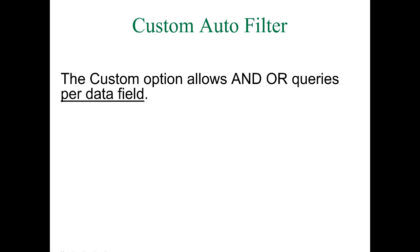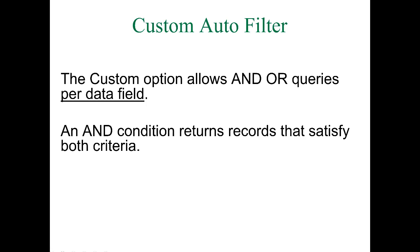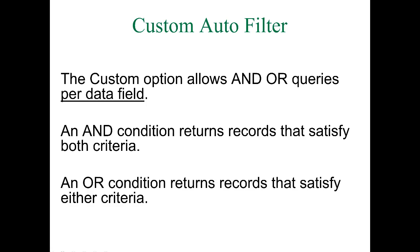The custom auto filter allows you to do AND and OR queries per data field. Queries is just a database term for searches, and field is another word for columns of data. An AND search condition returns records that satisfy both criteria. For example, if you were looking for my information in a faculty database, you could search for last names that begin with the letter M and end with the letter S — my name would come up, but Monroe or Mendez would not, even though they satisfy one criterion, because both must be satisfied with an AND query.